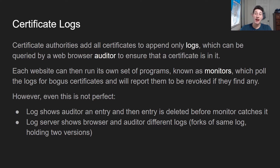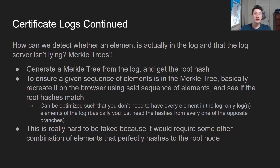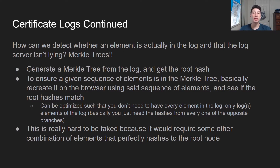So how can we make sure that's not happening? Well, this is actually really cool. We're going to be using Merkle trees and doing cryptographic proofs. Basically, we first generate a Merkle tree from the log itself and get the root hash of it. To ensure that a given element is in the Merkle tree — since the browser's job is to verify that a certificate is in the log — you would take that element and use a bunch of other elements within the Merkle tree to see if you can recreate that root hash. If you can, you've cryptographically proved that element is actually in the log. It's really hard to fake this because faking it means you found some combination of elements that perfectly hashes to the root involving your fake certificate, which is really hard to do.